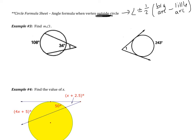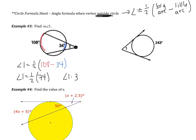Example 3 has two little examples, and we're going to do both. In the first example, our vertex is outside the circle. So angle 1 equals one half the big arc that it intercepts, subtract the little arc — subtract 34. In this case, angle 1 equals one half of 74, so angle 1 is 37 degrees.